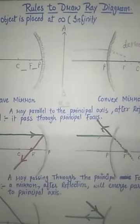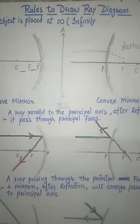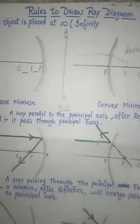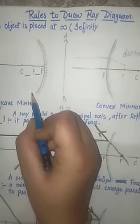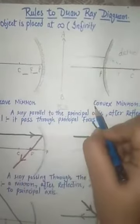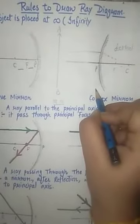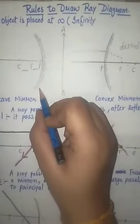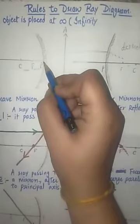Good morning everyone. Today we will discuss a topic of Class 10th, and the name of the topic is 'Rules to Draw Ray Diagrams.' First of all, you have to see — this is our concave mirror, whose outer side is polished and inner side is the reflecting side. This is our convex mirror, whose inner side is polished and outer side is the reflecting side. First, you have to draw a mirror, and the midpoint of the mirror is known as the pole, noted by P.